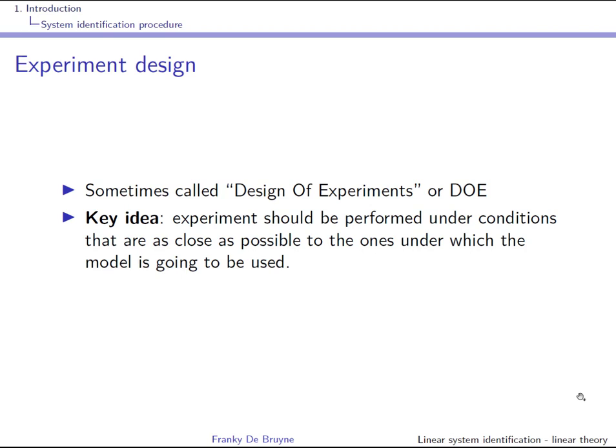In a near-flood situation, very little rain will percolate into the soil as it is saturated with water — most rain ends up in the river and the system behaves approximately linearly. When the soil is not saturated, part of the rain goes into the ground and the system behaves non-linearly. It would make no sense to select data in a low-water, non-linear situation to identify a model for a near-flood linear working point.